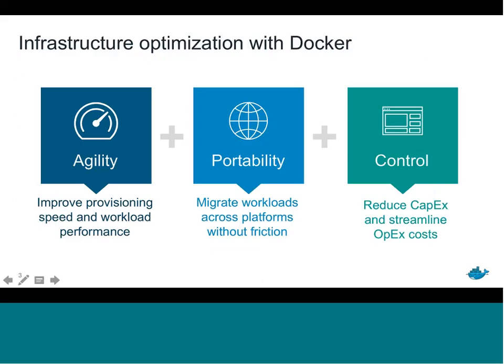Today we're going to talk about infrastructure optimization with Docker, which includes three things: agility, portability, and control. Agility means improving the provisioning process, the speed at which applications are built, and the performance of workloads. Portability means the ability to migrate workloads across different platforms with code working exactly the same way, cutting out friction. Control comes down to maintaining infrastructure costs — reducing capital and operating expenditures by leveraging containers.